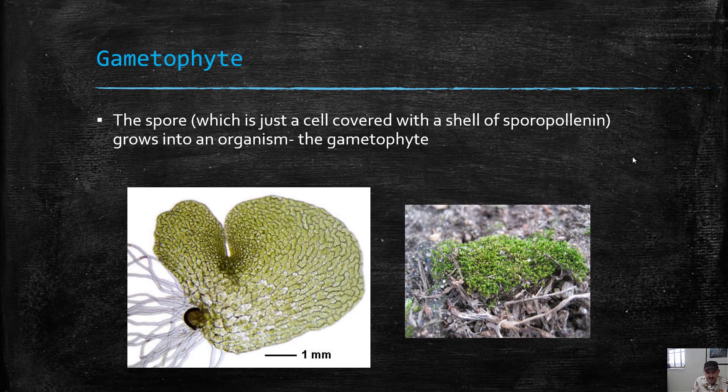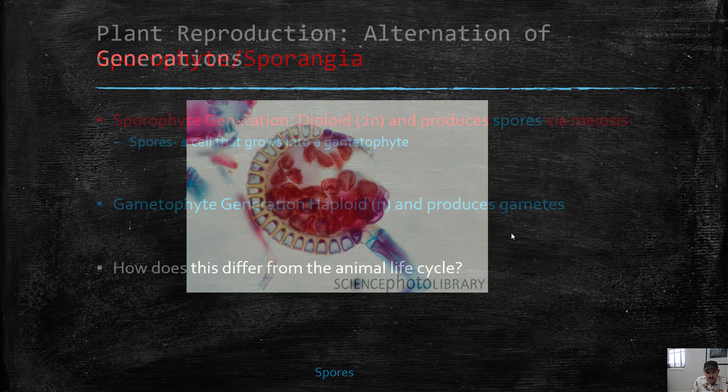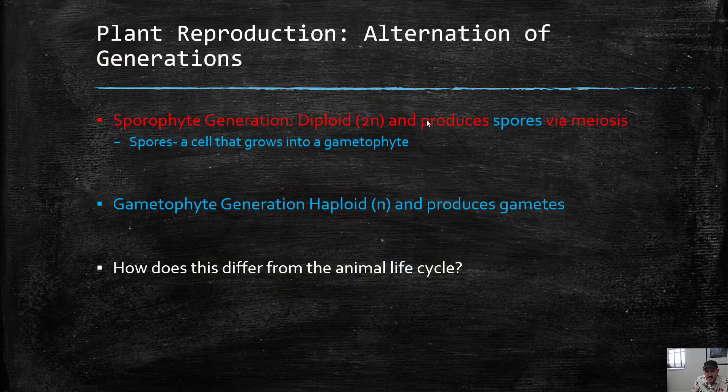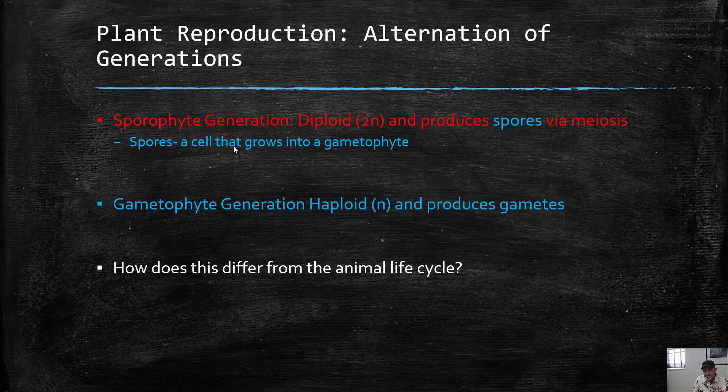So we've talked about the plant life cycle. The sporophyte generation makes spores via meiosis. Spores are cells that can grow into a gametophyte. Gametophytes are a haploid organism that produce gametes by mitosis. And when they fertilize one another, they make a zygote that grows into an embryo that becomes the next sporophyte.